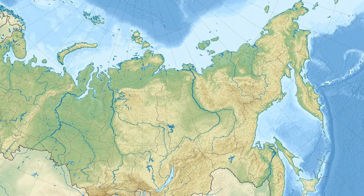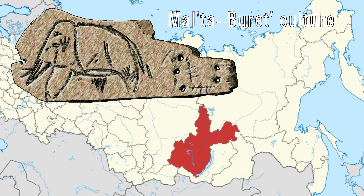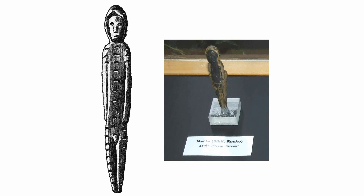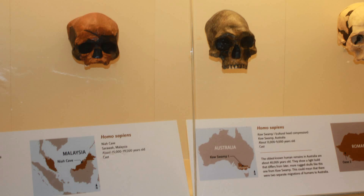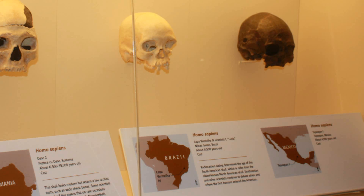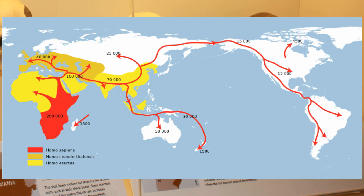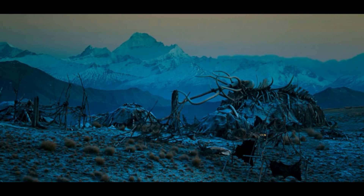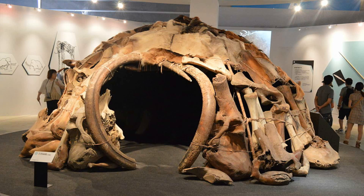Siberia was obviously inhabited by early humans as well. The Malta-Buret culture existed there from about 22,000 BCE to 13,000 BCE, and possessed an interesting culture, most famously creating female figurines out of mammoth ivory - often referred to as the Venus figurines - which likely had some sort of religious significance. By this time Homo sapiens were very widely dispersed: the Aboriginals had already been in Australia for tens of thousands of years, Japan had been inhabited, and the ancestors of Native Americans - whom the Malta-Buret culture had a genetic close relationship to - had already crossed the Bering Land Bridge to colonize the New World.